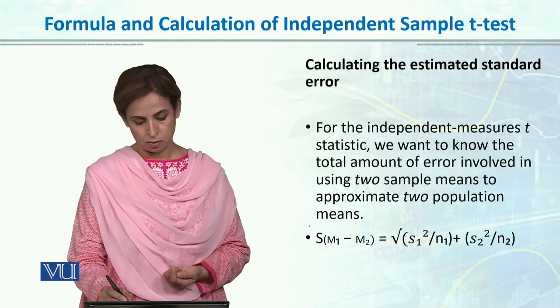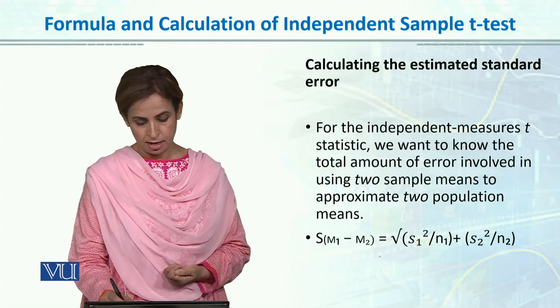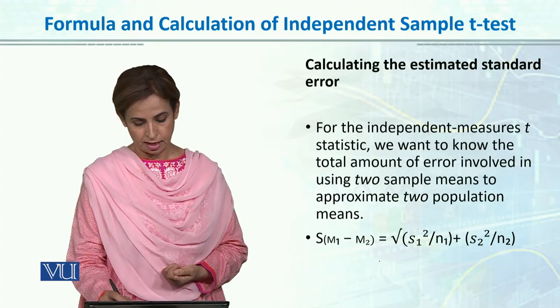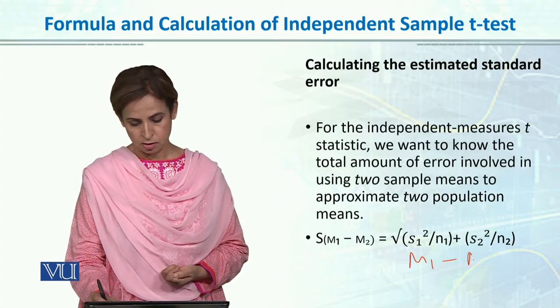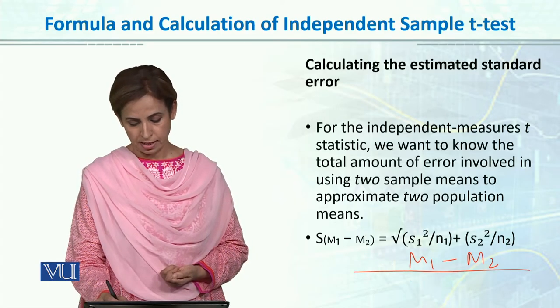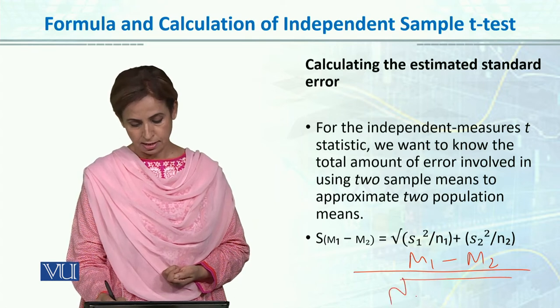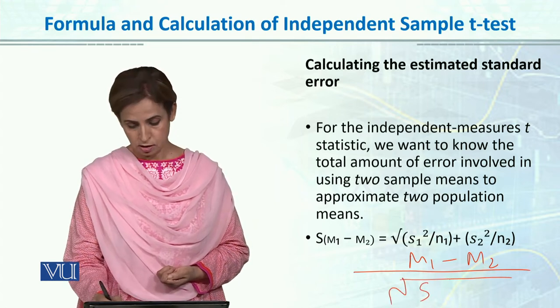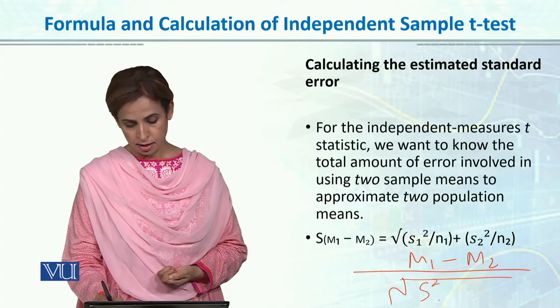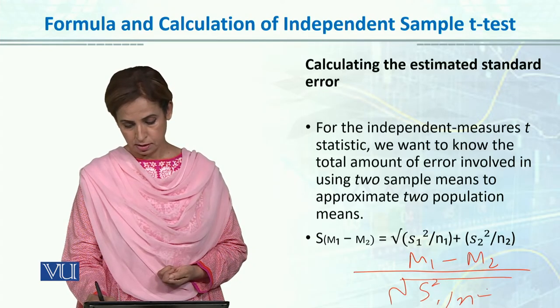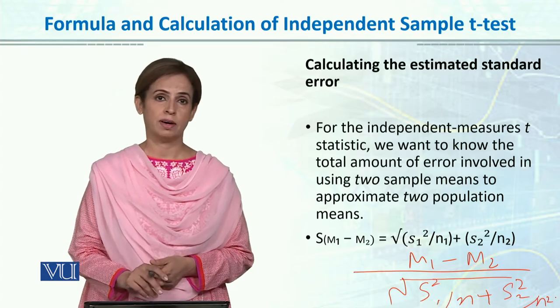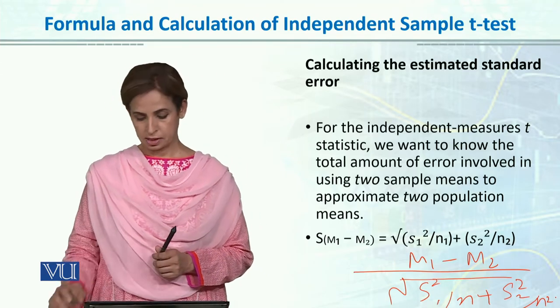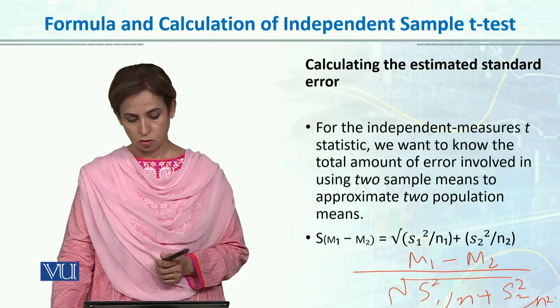The t-test formula: if we want to calculate the difference manually, we will calculate mean 1 minus mean 2 divided by the square root of variance 1 divided by n1 plus variance 2 divided by n2. This is what we have done earlier, and I'm sure if you go to the last lecture you can recall that.